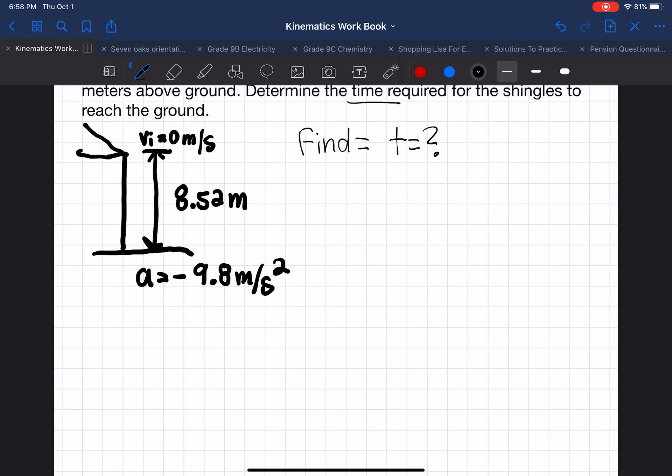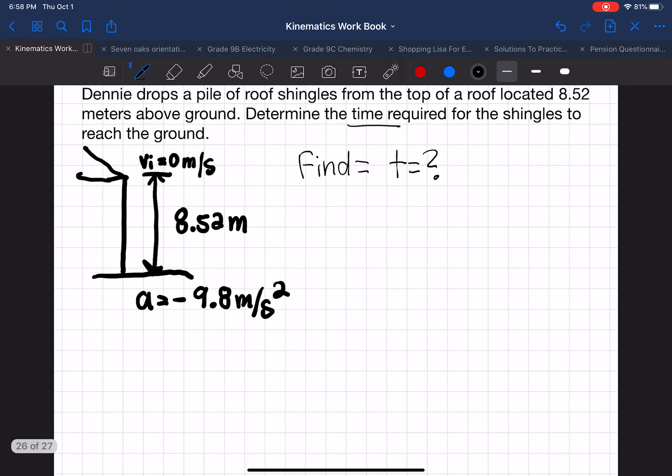So how long will it take for the shingles to reach the ground? So we have initial velocity, and we have acceleration, and we have the displacement or distance. Now we need time. So let's go back to our equations page and try to figure out which equation we can use.